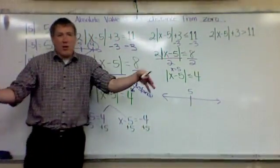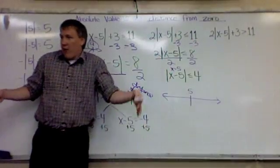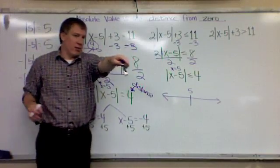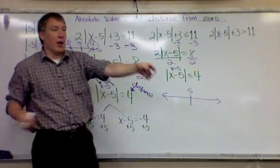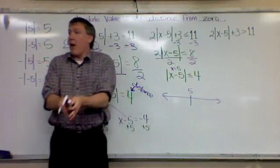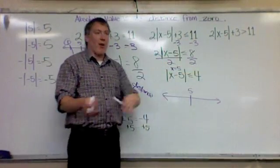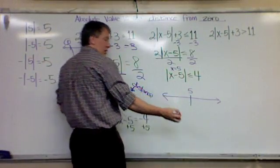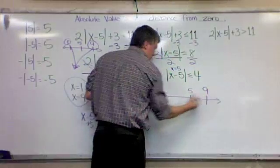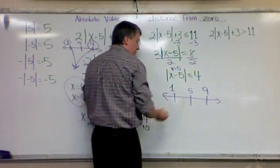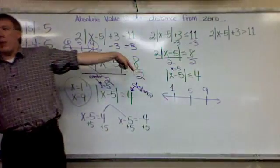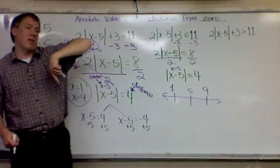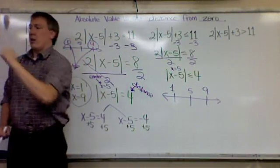Where are my boundaries? How far away from 5 are my boundaries? Nine and one. How far away? They're 4 away from 5. The boundaries are 4 away from 5. What are those two boundaries? 9 and 1. So here are my two boundaries. Can I equal those boundaries? Yes. So am I going to do a solid or open dot? Solid. Because I can equal those.